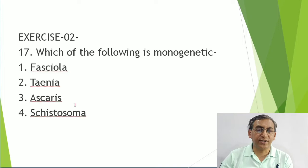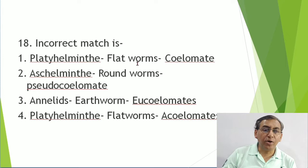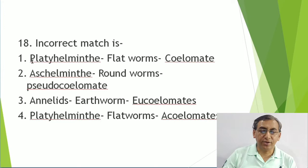For the incorrect match question: Platyhelminthes-flat worm-coelomate is incorrect because Platyhelminthes are acoelomate, not coelomate. Aschelminthes-roundworm-pseudocoelomate is correct. Annelida-earthworm-eucoelomate is correct. So the incorrect match is Platyhelminthes described as coelomate.